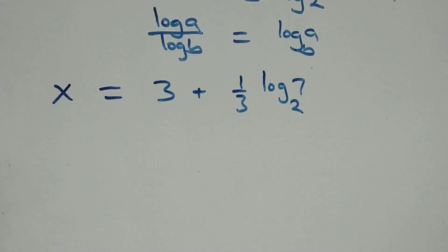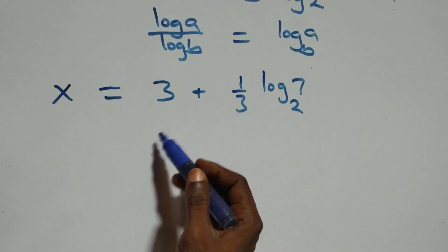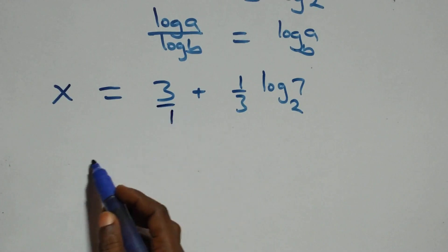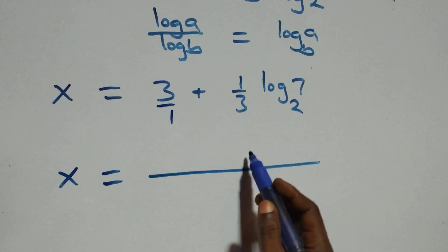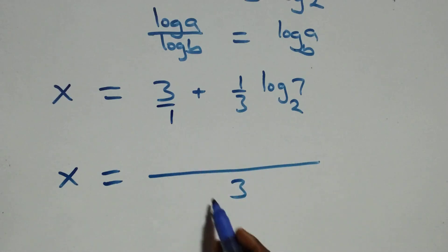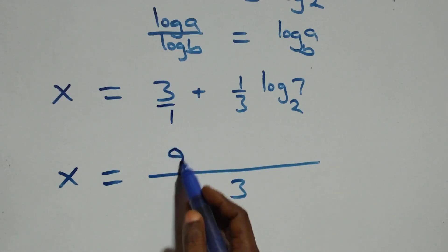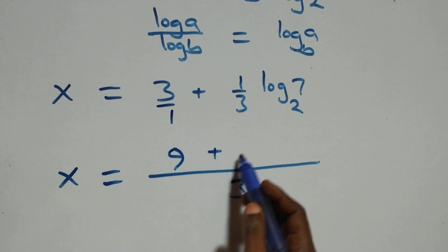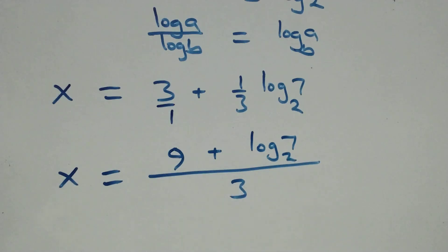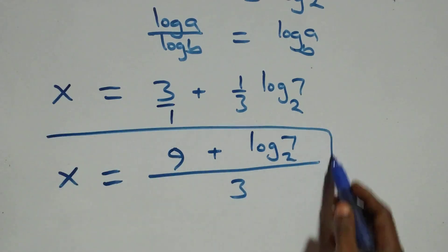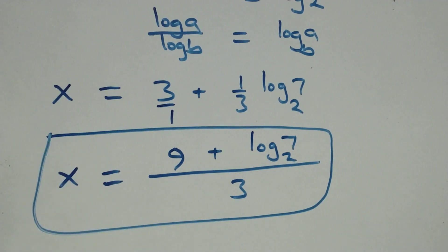So what we have becomes x equals 3 plus one-third times log 7 base 2. We bring this together as one fraction — 3 is 9 over 3 — so the value of x is 9 plus log 7 base 2, all over 3. Let's check if this satisfies the original problem.